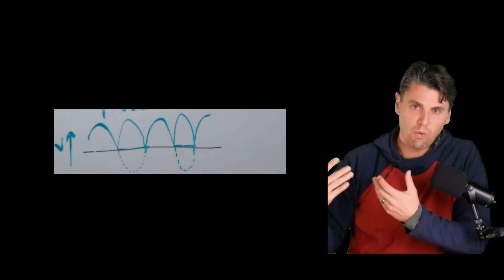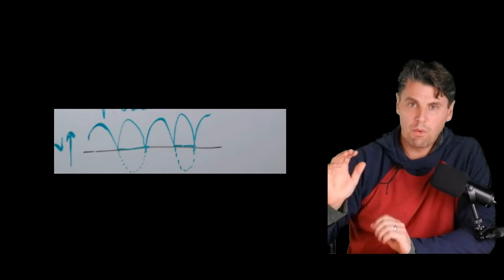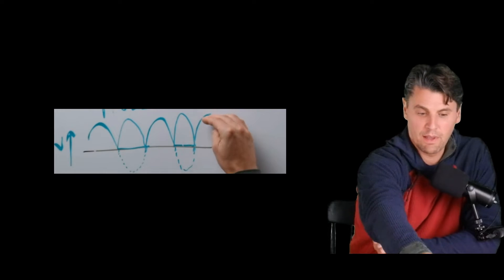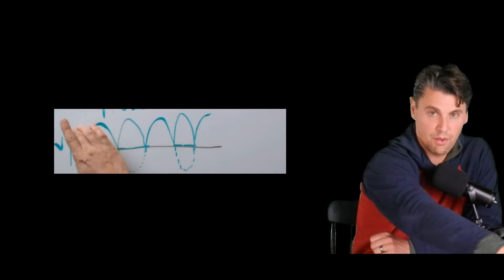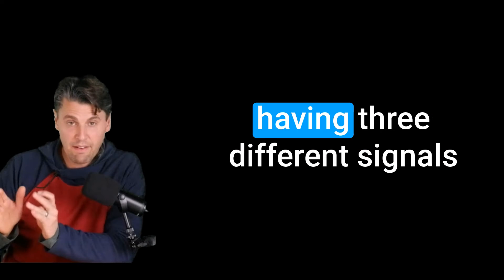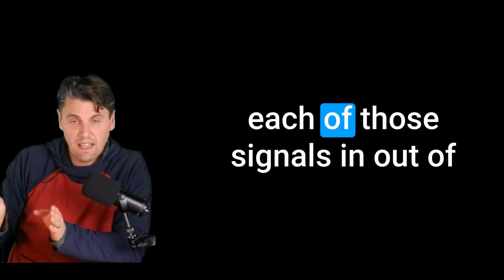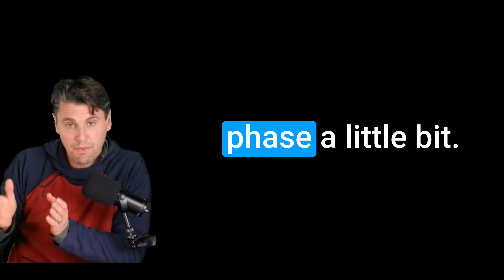That's what we call ripple in the signal because it's going up and down. And what we want is actually less ripple, we'd like something to be closer to a constant value. We can achieve this by actually having three different signals that we send in, and we send each of those signals in out of phase a little bit.